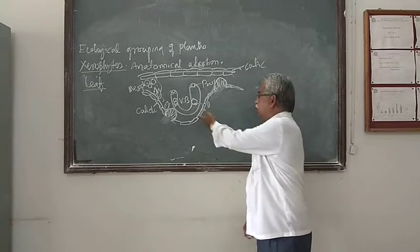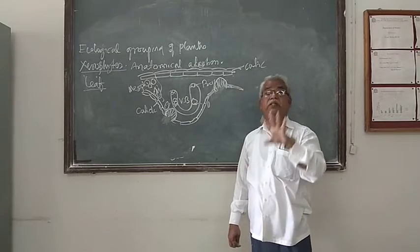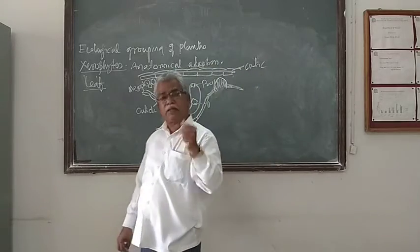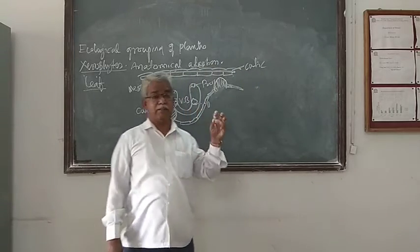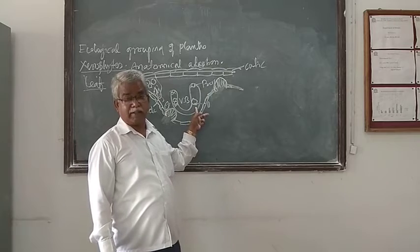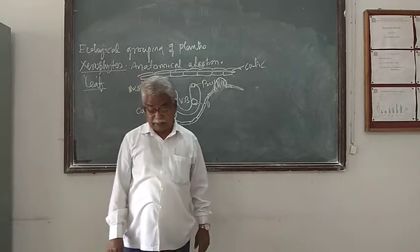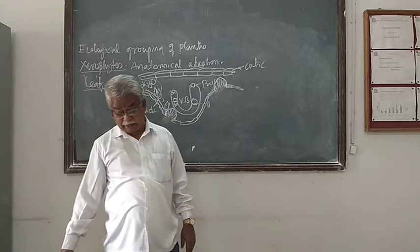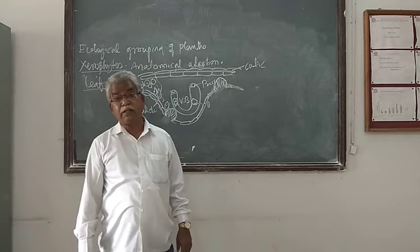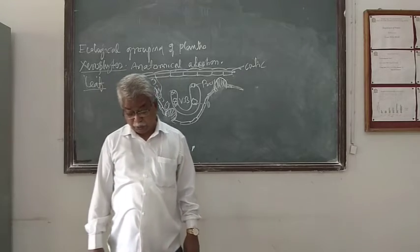By the help of this sunken stomata, when stomata are embedded in the palisade tissue, that is called the sunken stomata. The stomata are embedded within the palisade tissue — these stomata are present within the palisade tissue — and that is why this is the particular and important characteristic, due to which the rate of transpiration can be decreased. The stomata hairs are also present in the transverse section of the Nerium leaf.